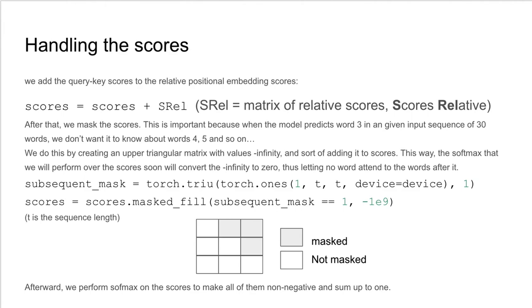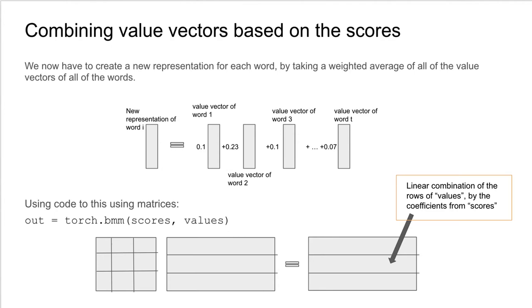Afterwards, we perform softmax on the scores to make them all non-negative and sum up to 1. Then we have to combine the value vectors based on our calculated scores. Basically, we are taking a weighted average of the value vectors for each word in our sentence. You can see the code for doing this using matrix multiplication.